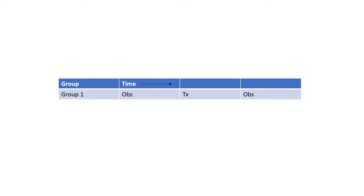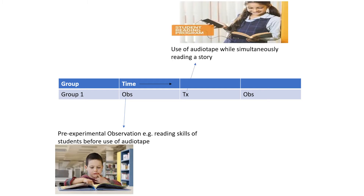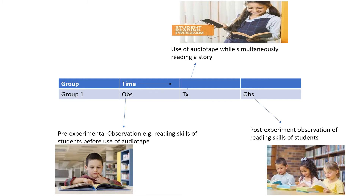For the first example, suppose an elementary school teacher wants to know if simultaneously reading a story and listening to it on audio tape will improve the reading skills of students in his class. He gives his students a standardized reading test, then has them simultaneously read and listen to simple stories every day for eight weeks, and then administers an alternate form of the same standardized reading test. If the students' test scores improve over the eight-week period, the teacher might conclude — perhaps accurately and perhaps not — that the simultaneous reading and listening intervention was the cause of the improvement.